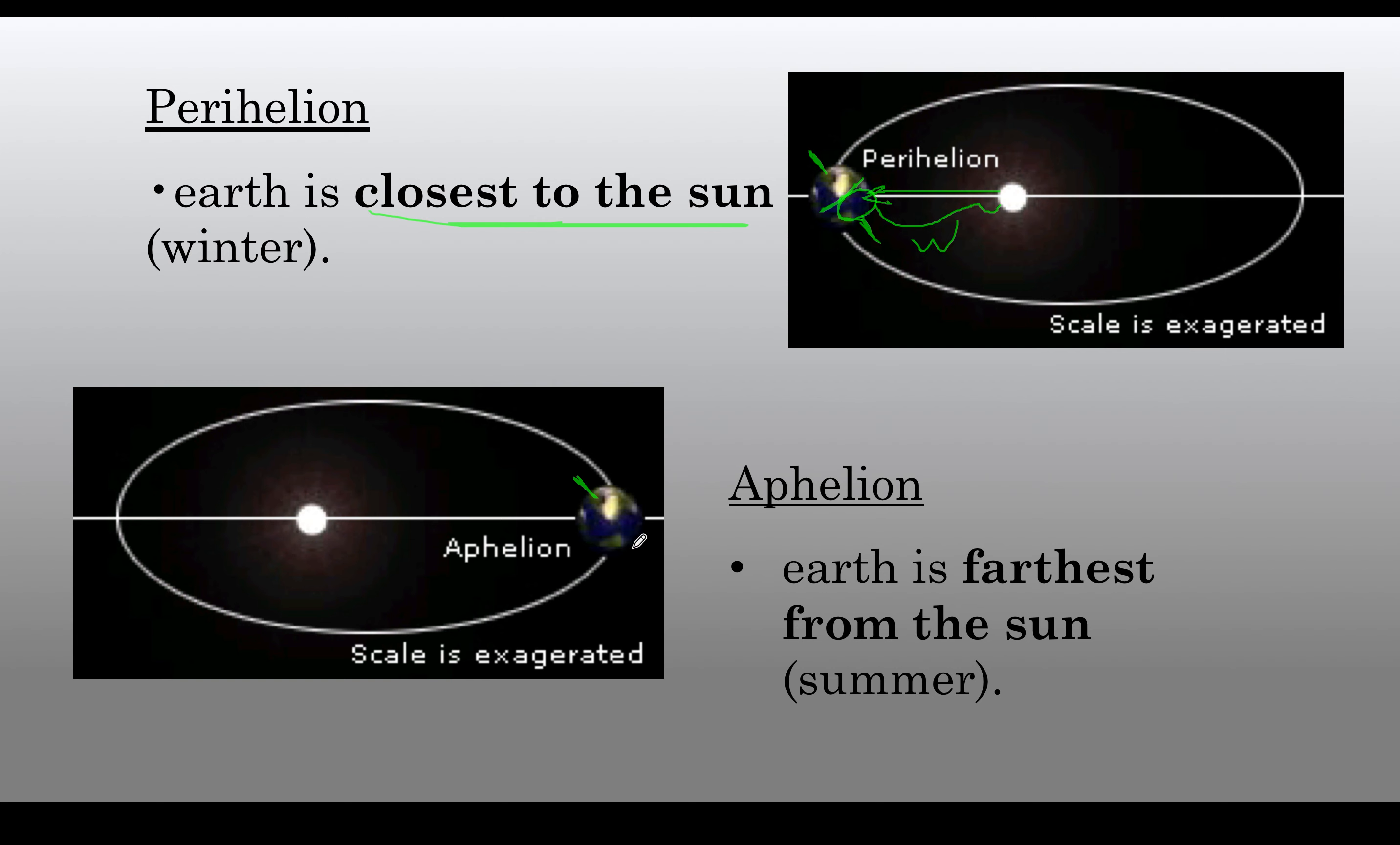And for the aphelion, we're actually pointed, we're tilted towards the sun, and we are further away, which is weird. A lot of people think that up here, the perihelion, we're closer to the sun, we must have summer. That's not the case. It's all due to the tilt. And for the aphelion, we're tilted towards the sun, and that's when we're furthest away, and that's actually our summer.